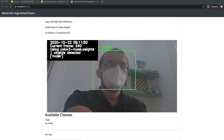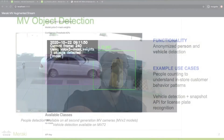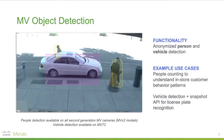As you probably know, Meraki MV cameras are able to detect objects like people or vehicles that are in their field of view. Vehicle detection is specific to our outdoor cameras, so just keep that in mind.